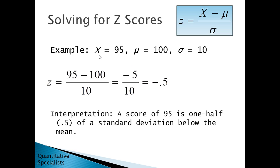For our last example, we have x of 95, mean of 100, and standard deviation of 10. So 95 minus 100 over 10 gives negative 5 over 10, which is a z of negative 0.5. We interpret this as: a score of 95 is one-half of a standard deviation below the mean.